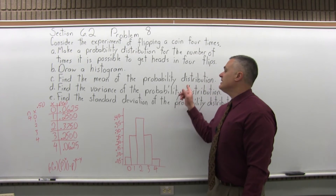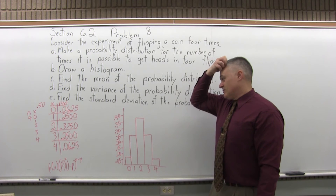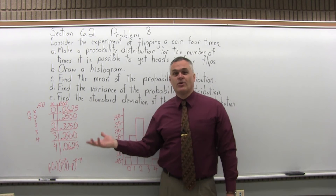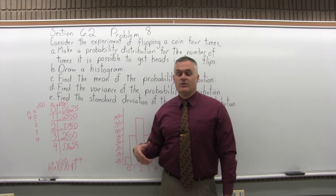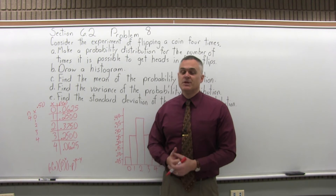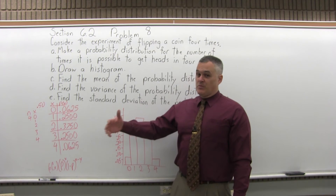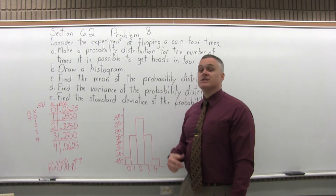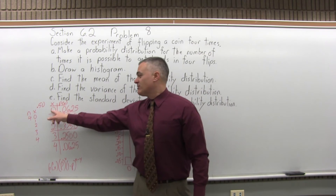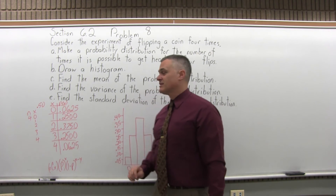Now C says find the mean of the probability distribution. The mean, or some books call it expected value, is: if you did this experiment of flipping a coin four times and counting how many heads you get, and you did that experiment millions of times and took the average of those millions of results, what would the answer be? We can do it much more efficiently by multiplying every number in the first column times its probability, getting a few results, and adding them together.